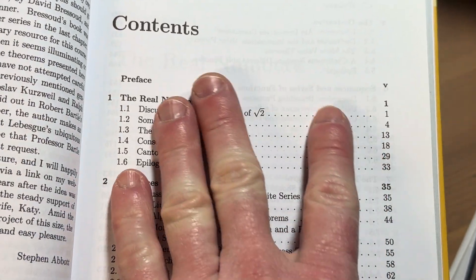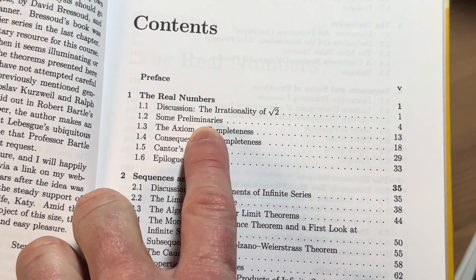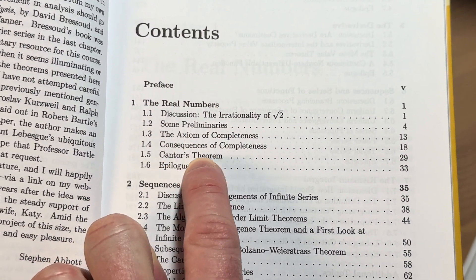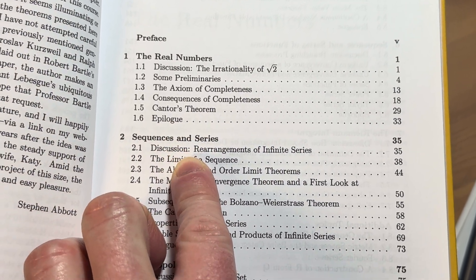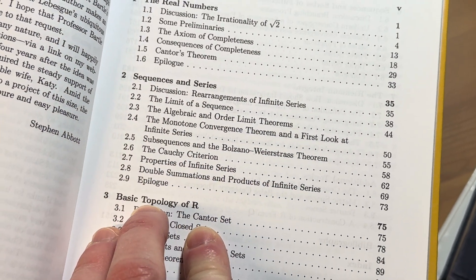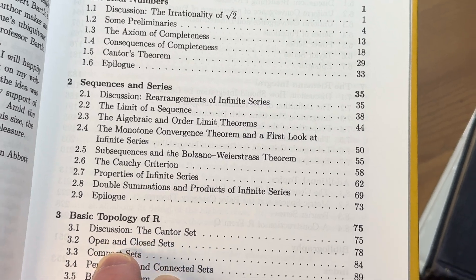Look at the content. So he starts with the real numbers. The axiom of completeness, consequences of completeness, Cantor's theorem, and sequences in series. Okay, so he does both.